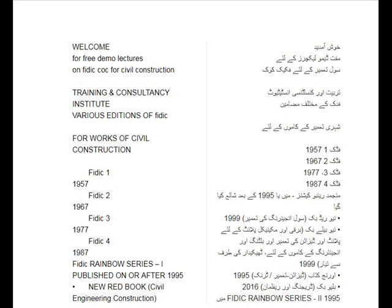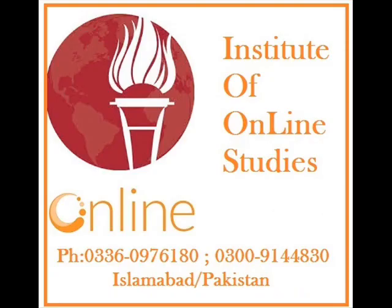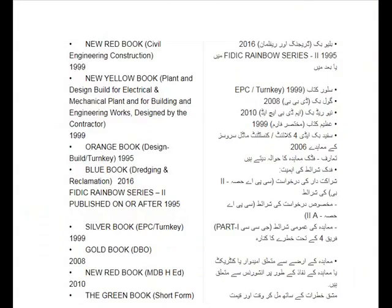Risk Allocation under FIDIC Forms: Risks arising from the contractor are allocated to either the Employer, the Contractor, or the Insurers. Provisions of contract time and cost are associated with these contractual risks, and specific clauses of FIDIC allocate risks between the parties to the contract.